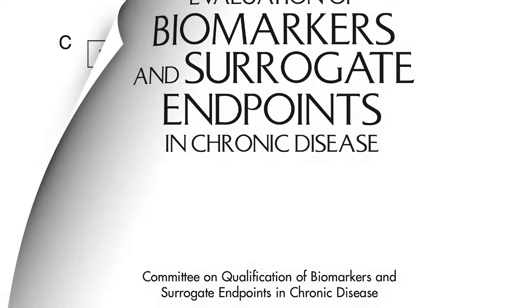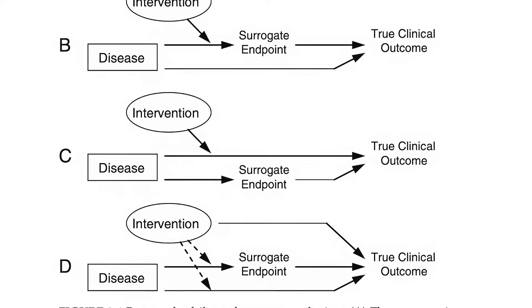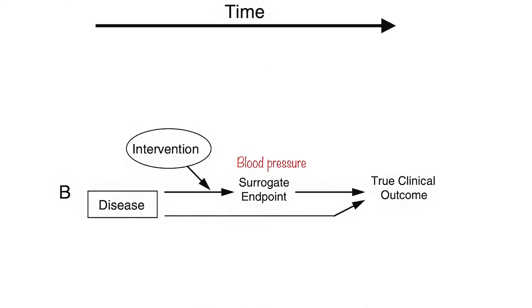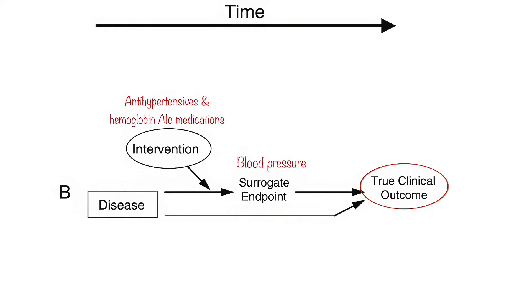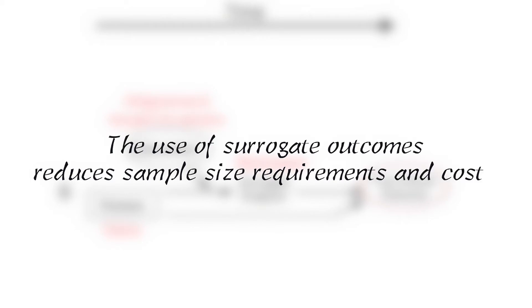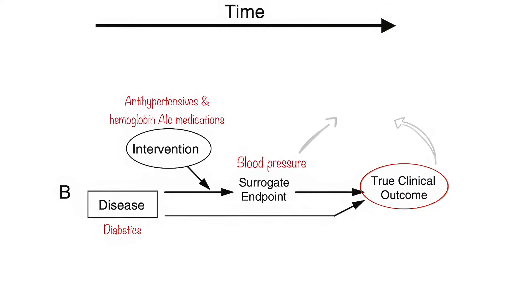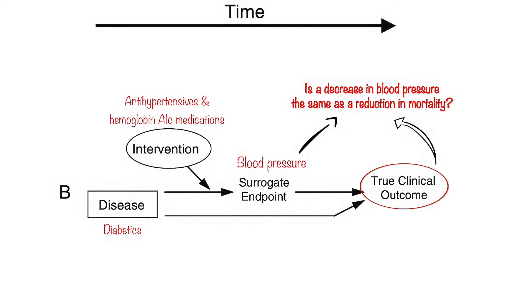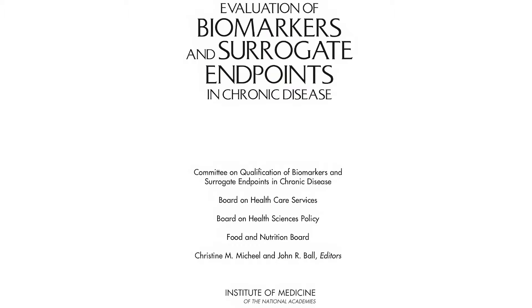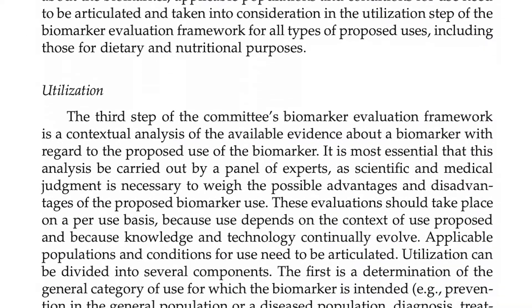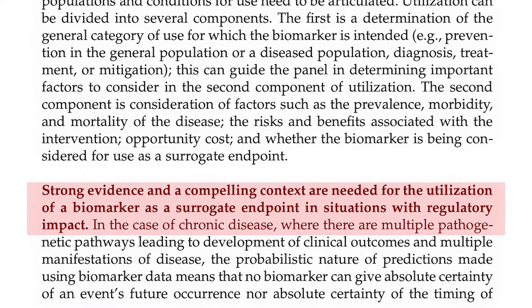A final issue is the use of surrogate outcomes. Surrogate outcomes are considered to predict clinical benefit or harm based on epidemiologic, pathophysiologic, or other scientific evidence. For example, blood pressure might be used as a surrogate measure following administration of antihypertensives, and hemoglobin A1c among diabetes populations. Studies using surrogate outcomes can generally be done with fewer subjects, completed more quickly, and at lower cost. However, they can lead to erroneous conclusions, and for this reason the 2010 Institute of Medicine recommendations state that surrogate endpoints should only be used if their ability to predict clinically important outcomes is conclusively documented.